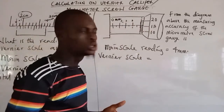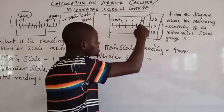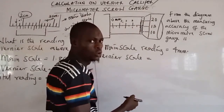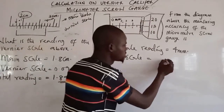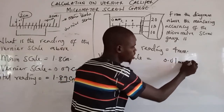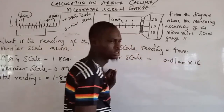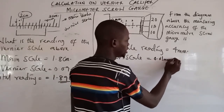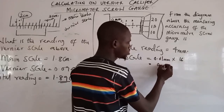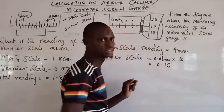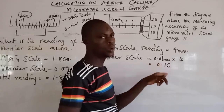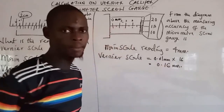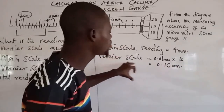This line here is 16. You multiply that 16 by the accuracy of the vernier scale, which is 0.01 mm. So my vernier scale reading equals 0.01 mm × 16 = 0.16 mm. That gives a vernier scale reading of 0.16 mm.